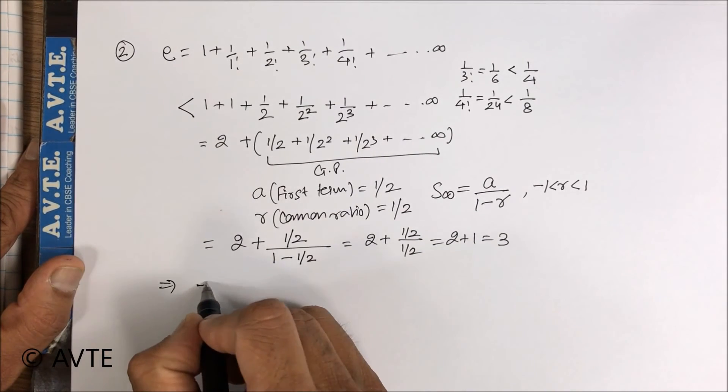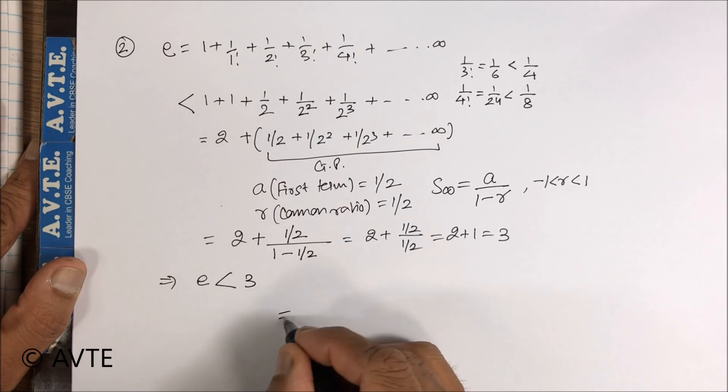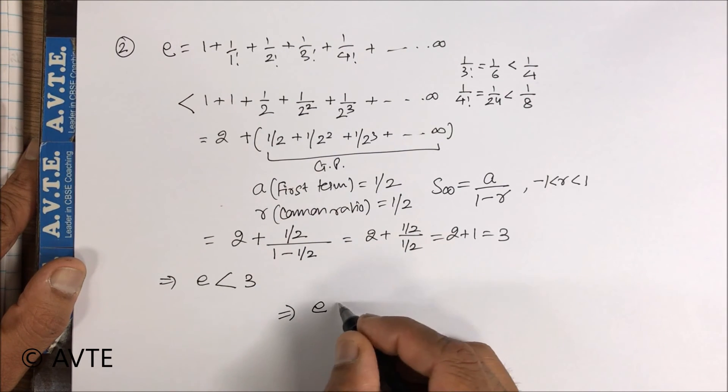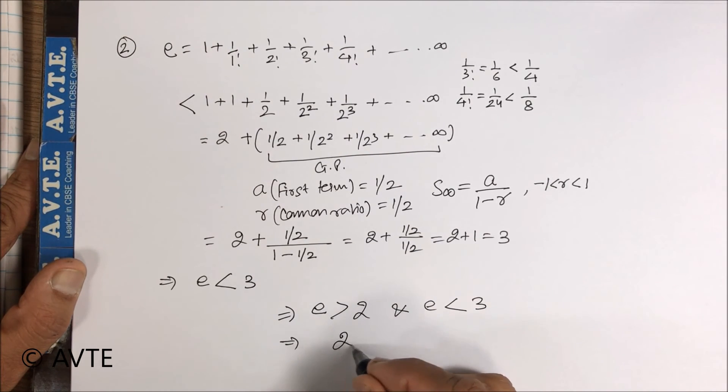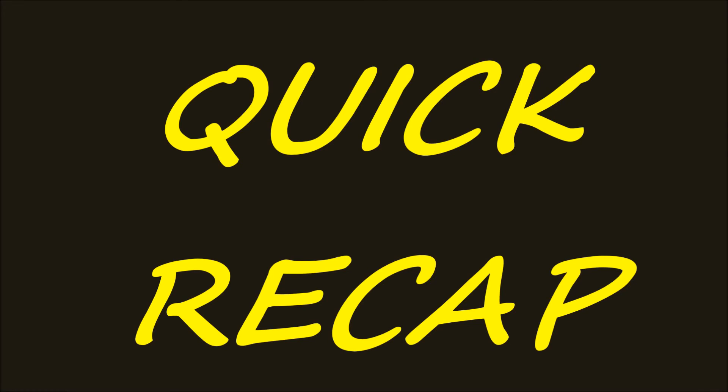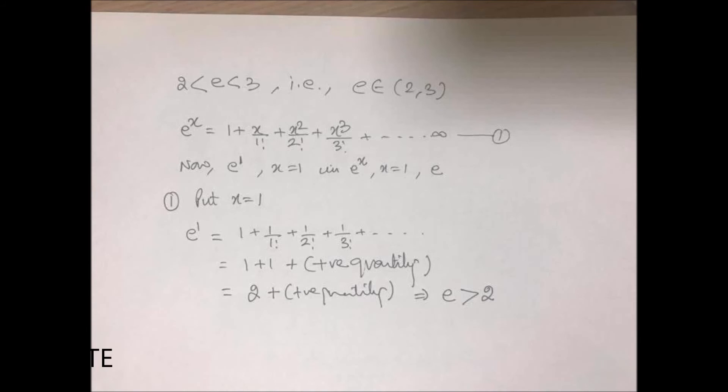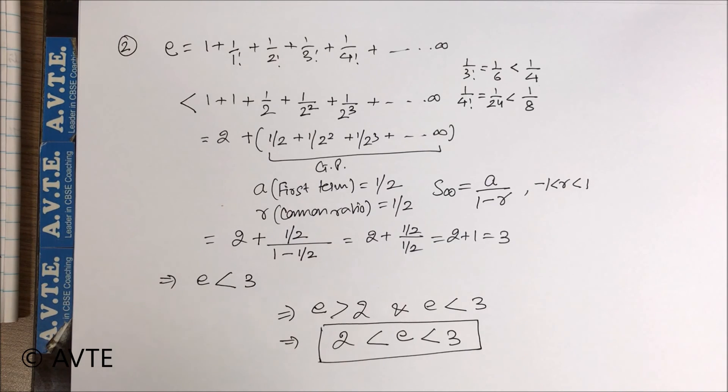So this implies that e is less than 3. So from case 1 and case 2, one can prove that e is more than 2 and e is less than 3, and therefore clearly e lies between 2 and 3. So this is quite easily done. Thank you very much.